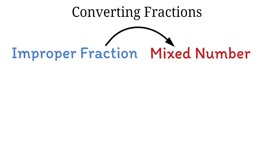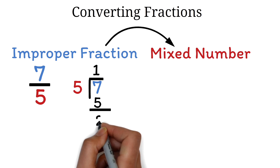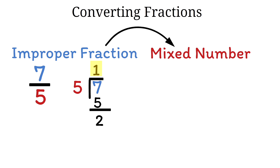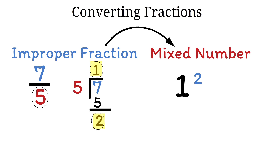Now let's try another example. Let's convert the improper fraction 7 over 5 into a mixed number. First, we'll divide the numerator by the denominator — so we have 7 divided by 5. We need to find a number that when multiplied by 5 gives a result smaller than but close to 7. So we'll use 1. 5 times 1 is 5. Next, we subtract 5 from 7, which gives us 2. So 7 divided by 5 is 1 with a remainder of 2. The 1 becomes the whole number and the remainder, which is 2, becomes our numerator. Finally, the 5 is the denominator, so it becomes the denominator of the mixed fraction. Our final answer is 1 and 2 fifths.